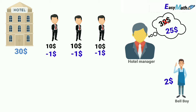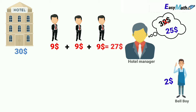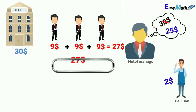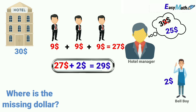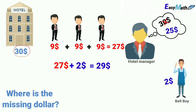So instead of $10, each of them paid $9 for the room. That gives us a total of $27. If we add that $27 with the $2 tip of the bellboy, then 27 plus 2 is equal to $29. And the question for this brain teaser is: where is the missing dollar? We started with $30 and now we have $29.